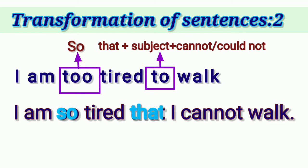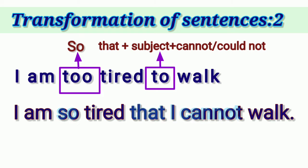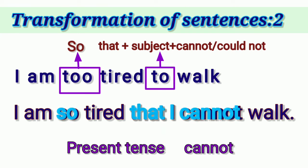The answer is: 'I am so tired that I cannot walk.' TOO² is replaced by 'so,' and TO² is replaced by 'that + subject.' Here the subject is 'I,' so it remains 'I,' and we use 'cannot' for two reasons: first, the sentence is in present tense ('I am' indicates present tense), and second, affirmative sentences take negative form.